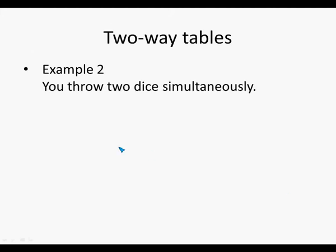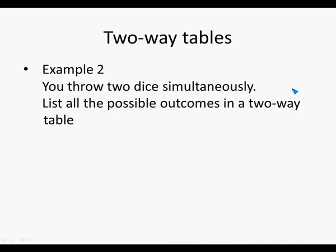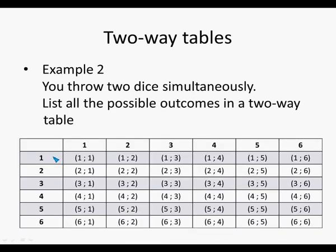Example two: you throw two dice simultaneously. List all the possible outcomes in a two-way table. The first die is listed from top to bottom and the second die from left to right. With the first die you can throw one through six; with the second die you can also throw one through six. So if the first die lands on a one, the second die can land on a one, two, three, four, five, or six.